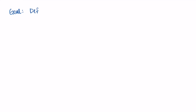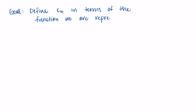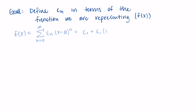Our goal is to define the coefficients in terms of the function we want to represent. If we have a function f of x and we're trying to write it as a sum from n equals zero to infinity with coefficients c sub n, we want a formula for each of those c sub n terms that depends on f. We'd like to use that function to help us know which coefficients to pick.